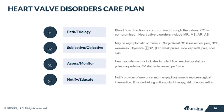Quick review: with heart valve disorders, blood flow direction is compromised through the valves, which means cardiac output is compromised. Heart valve disorders include mitral regurgitation, mitral stenosis, aortic regurgitation, and aortic stenosis. The patient may be asymptomatic or just have a murmur. Subjective data if cardiac output is compromised may include chest pain, shortness of breath, weakness, and fatigue. Objective data may include decreased blood pressure, increased heart rate, weak pulses, slow capillary refill, and pale, cool, clammy skin.